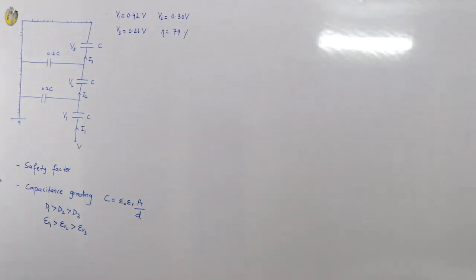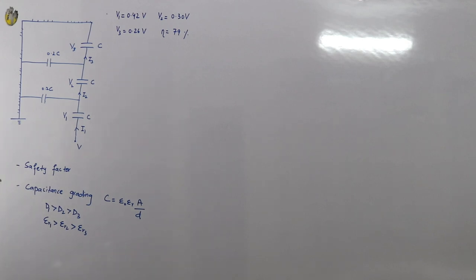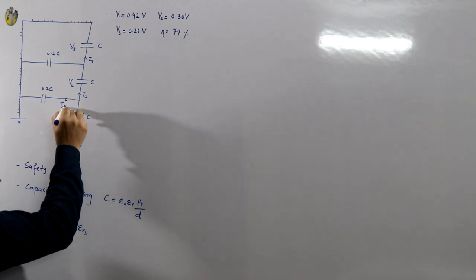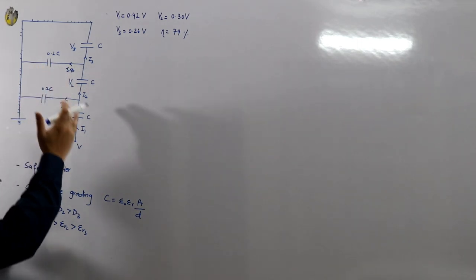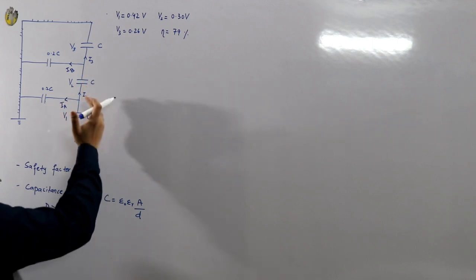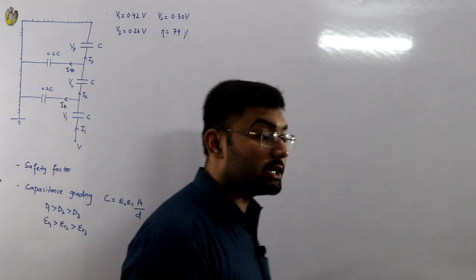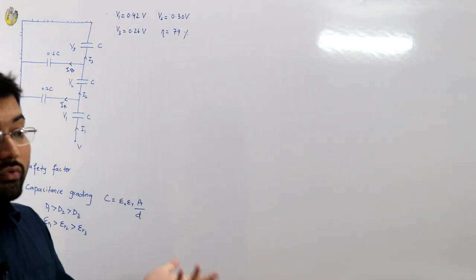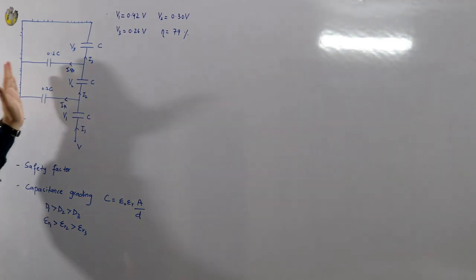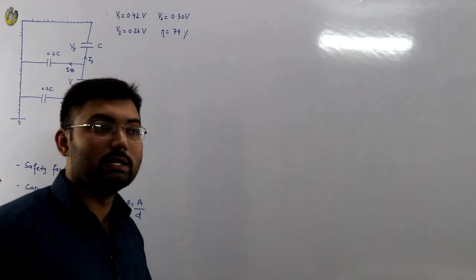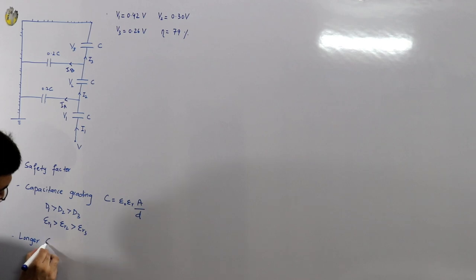Coming back to basics: what is causing the problem? The problem is caused by the leakage currents Iₐ and I_b from the shunt capacitances. If these shunt capacitances were not present, I₁ = I₂ = I₃ and voltages would be equal in this series circuit. To negate the shunt capacitance effect, one idea is to move the string farther from the grounding structure by using a longer cross arm.